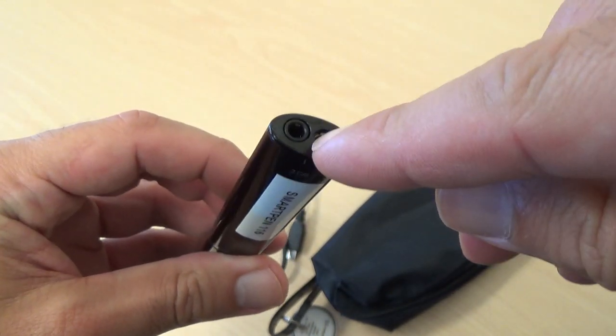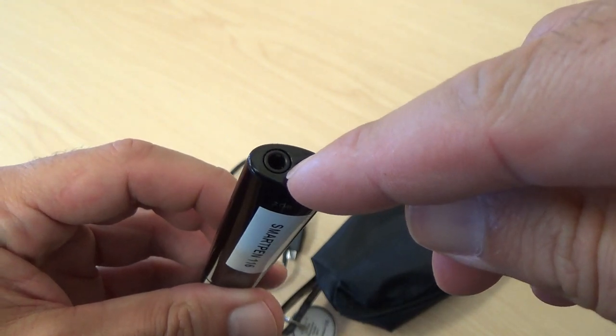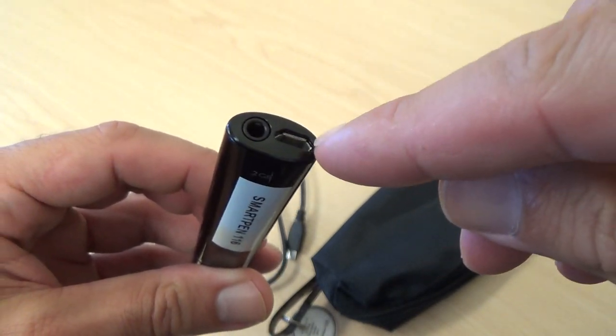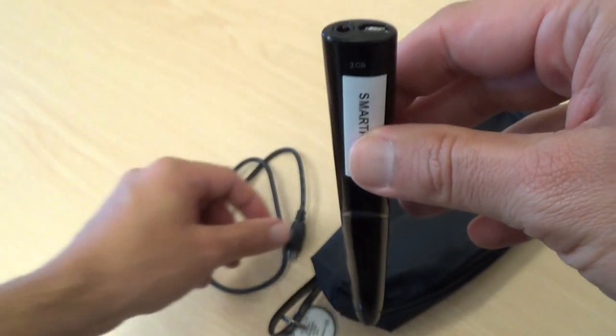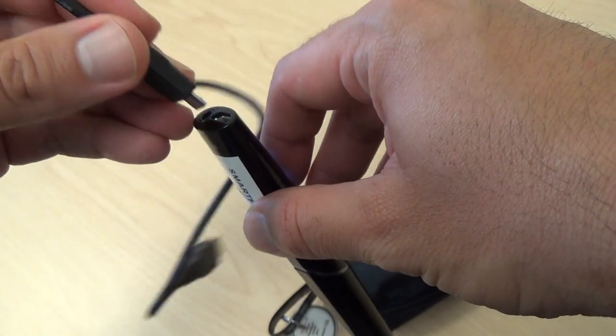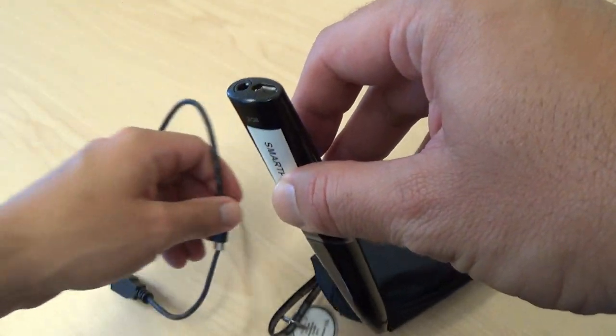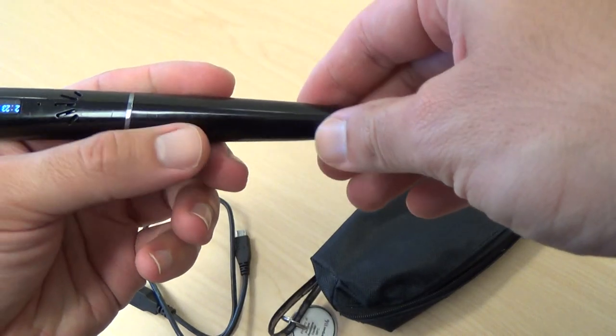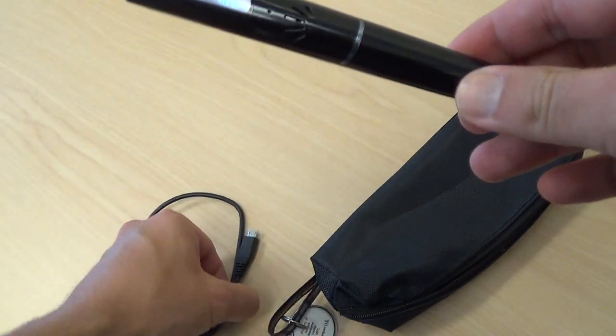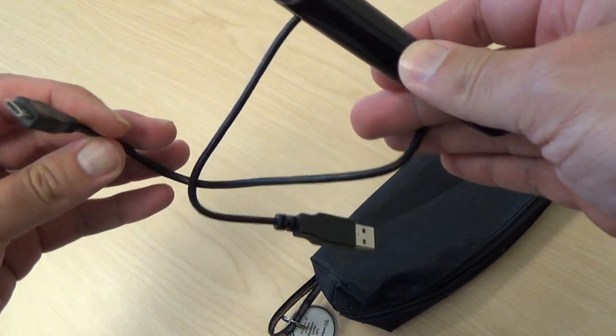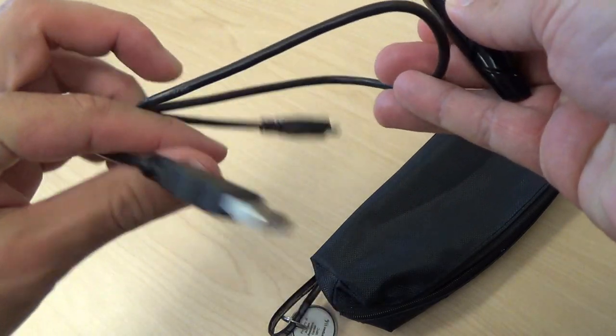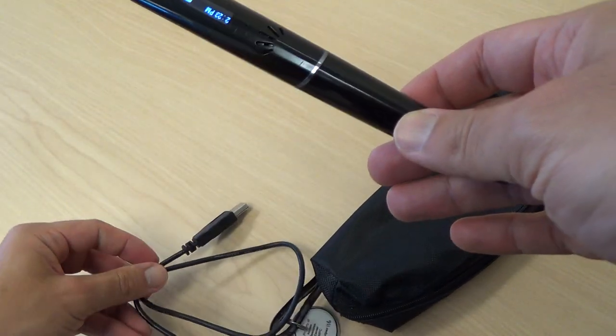On the top of the pen you'll see a headphone port for listening with standard headphones and a USB port which is used for charging. So this cable goes straight into there and that's how you can charge it. You can use a standard phone charger or a computer or anything that's going to accept a standard USB for charging.